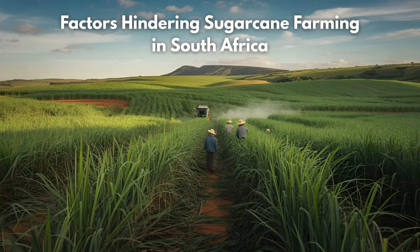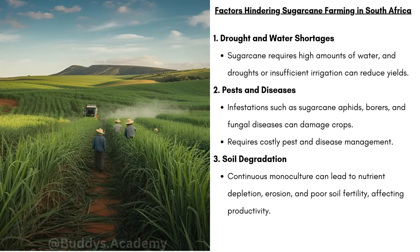Now let's look at the factors that are going to hinder sugarcane farming — the challenges and obstacles farmers face. The first factor is drought and water shortages. Sugarcane requires high amounts of water, and droughts or insufficient irrigation can reduce yields. Since sugarcane is a water-intensive crop, long dry periods will stunt its growth, which means the amount farmers can harvest will be very low, resulting in lower profits.